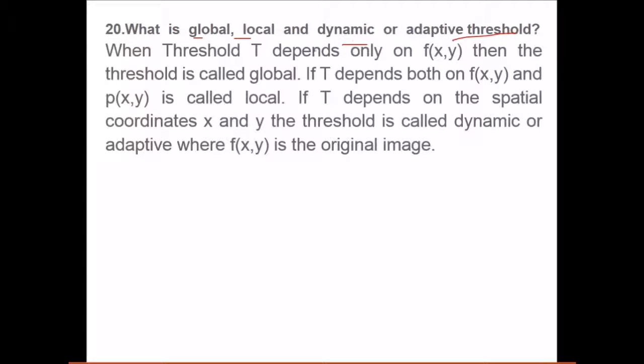What is global, local, dynamic, and adaptive threshold? When threshold T depends only on f(x,y), the threshold is called global. If T depends on both f(x,y) and p(x,y), this is known as local. If T depends on the spatial coordinates of x,y, the threshold is called dynamic or adaptive, where f(x,y) is the original image.